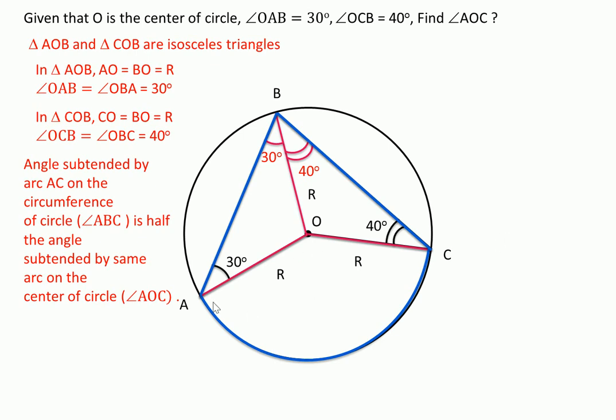Arc AC is subtending angle ABC on the circumference, so angle ABC is half of angle AOC.